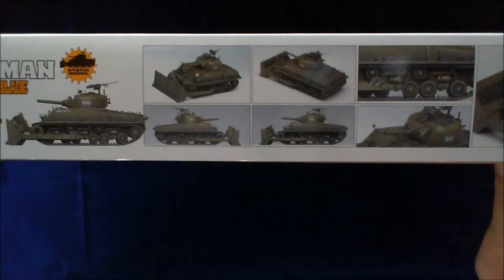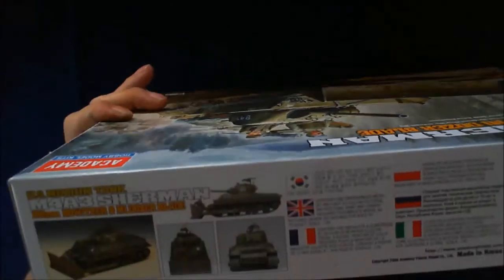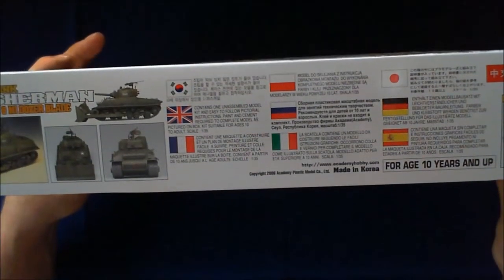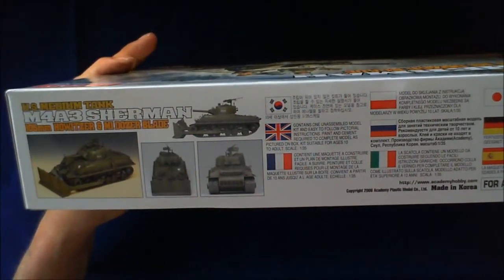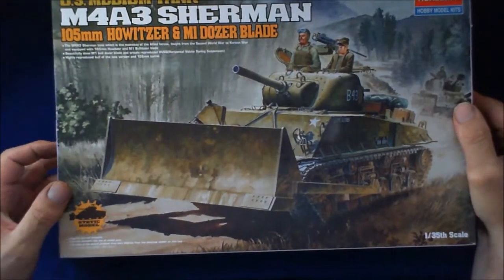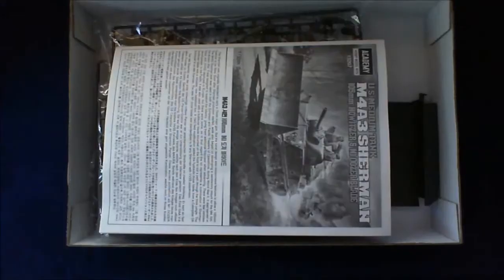Right, on the side of the box, just some nice pictures of the finished kit. On the other side, you've got the English, Japanese, and all the other countries, French, and some more nice little pictures of it finished. This is 1:35 scale as you can see down the corner.